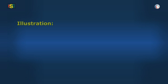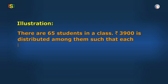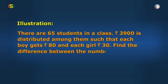Take another illustration to further clarify your concepts. There are 65 students in a class and Rs. 3900 is distributed among them so that each boy gets Rs. 80 and each girl gets Rs. 30. Then find the difference between the number of boys and girls in the class.